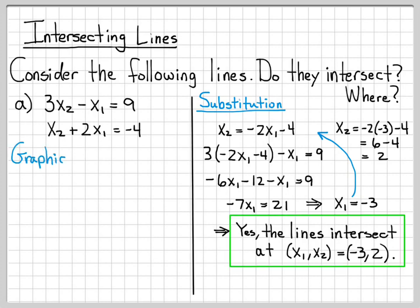Another way to do it is what I call the graphical method, where we actually just solve for the intersection graphically. So what I'm going to do here is I'm going to start with the first equation, 3x2 minus x1 equals 9, and I'm going to solve for x2. So I'm going to put the x1 to the other side, and then I'm going to divide both sides of the equation by 3 to isolate x2, and I'll get this equation.